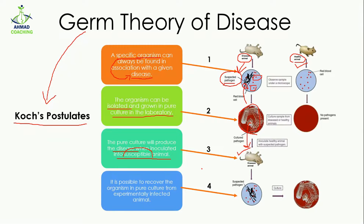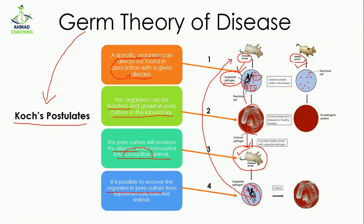The fourth postulate states: it is possible to recover the organism in pure culture from the experimentally infected animal. From the animal into which we inoculated the pathogenic bacteria, you can isolate the pathogen again. It is like a cycle — you isolated the organism from the diseased animal, cultured it, took the pure culture, inoculated a healthy mouse, that healthy mouse got the disease, and from that diseased mouse you got the culture of that pathogen again. These are the four postulates of the germ theory of disease.